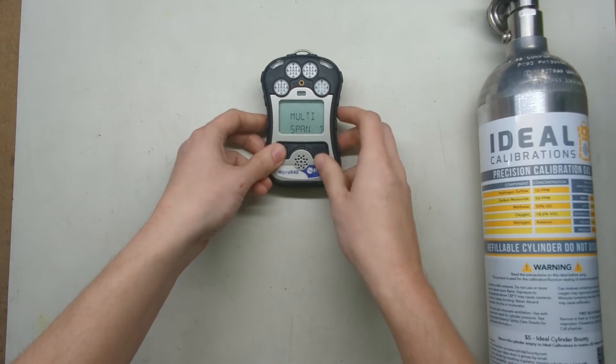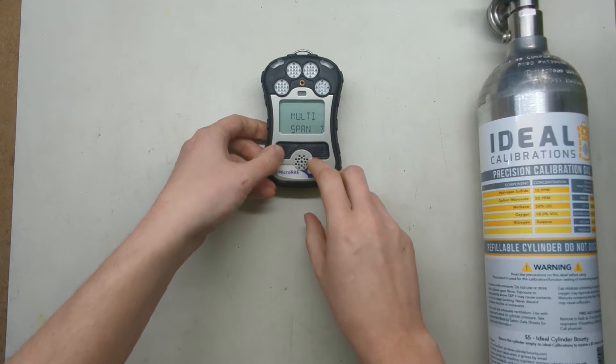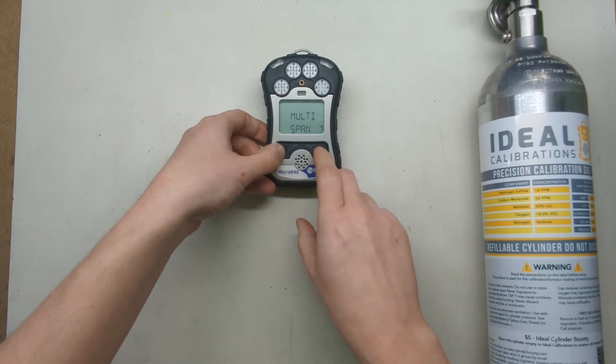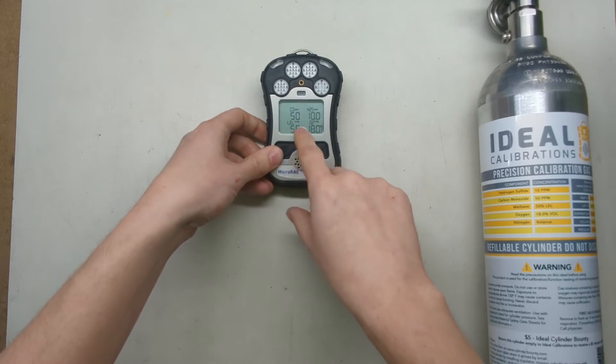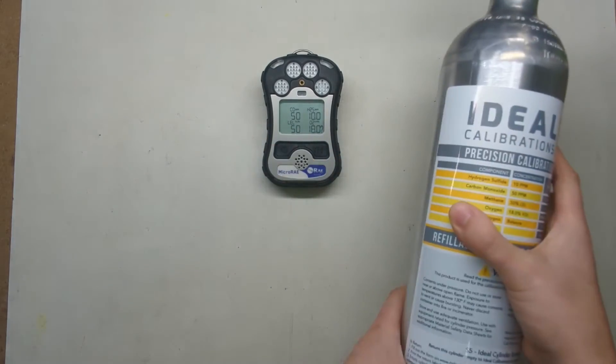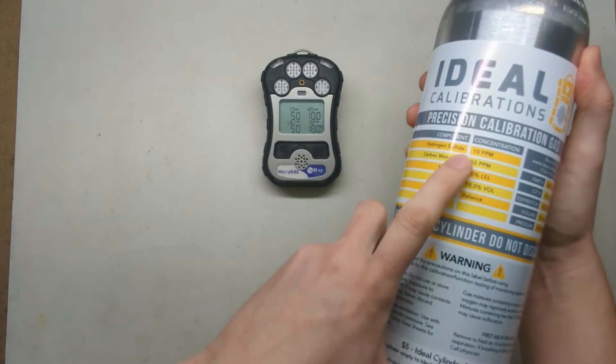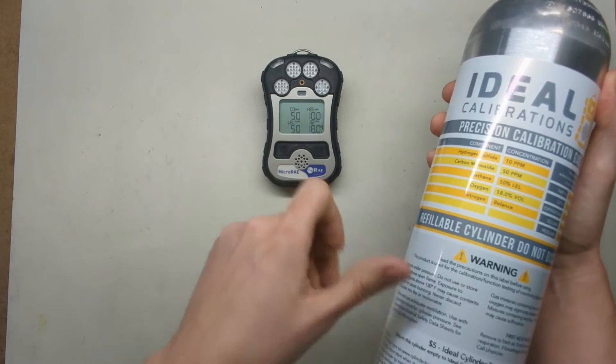On this screen now we're going to press enter. Now it's saying multi-span. Press enter here and it's asking for the gas values. You need to check this, make sure these all match. They do: 10, 50, 50, 18. All good.